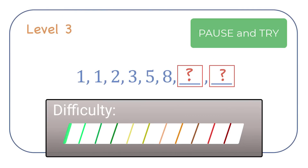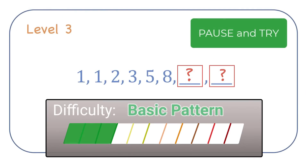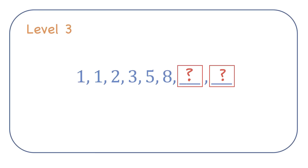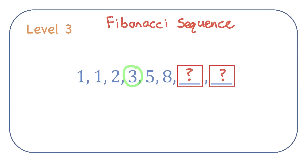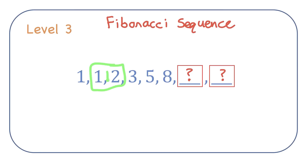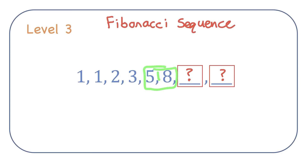Level 3. You probably recognize this sequence — it's probably the most famous sequence, it's the Fibonacci sequence. Notice that the value of any single number in this sequence — I'll pick 3 as an example — is equal to the sum of the previous two terms: 1 plus 2 is 3. So if we continue this pattern: 1 plus 1 is 2, 1 plus 2 is 3, 2 plus 3 is 5, 3 plus 5 is 8. So the next number would be 5 plus 8, which is 13, and then 8 plus 13, which is 21.